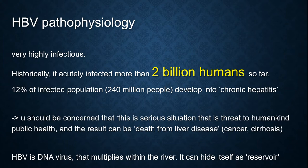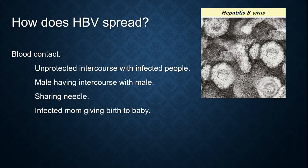12% of the infected population develops into chronic hepatitis. This is a serious situation that is a threat to public health. The result can be death from liver disease such as cancer or cirrhosis. Hepatitis B virus is a DNA virus that multiplies within the liver, so it can hide itself as a reservoir. It spreads through blood contact, unprotected intercourse with infected people, male having intercourse with male, sharing needles, or an infected mother giving birth to a baby.